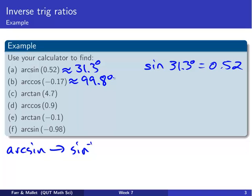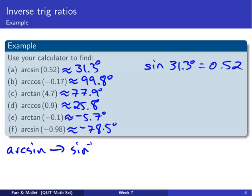Pause the video and have a go at C, D, E, and F yourself. When you come back, the answers will be here. Arc tan of 4.7 is about 78 degrees. Arc cos of 0.9 is 25.8 degrees. Arc tan of minus 0.1 is about minus 0.57 degrees. And arc sine of minus 0.98: the angle that gives you that sine value is approximately minus 78.5 degrees.